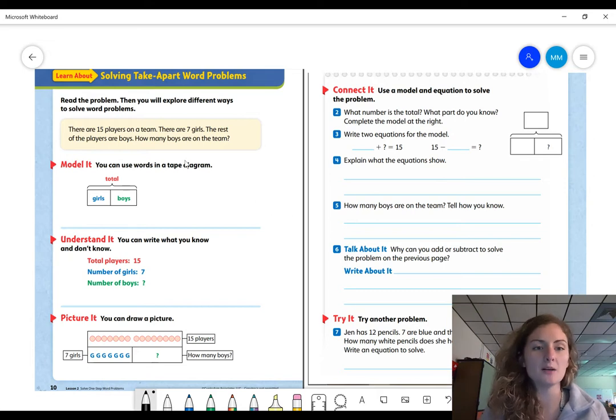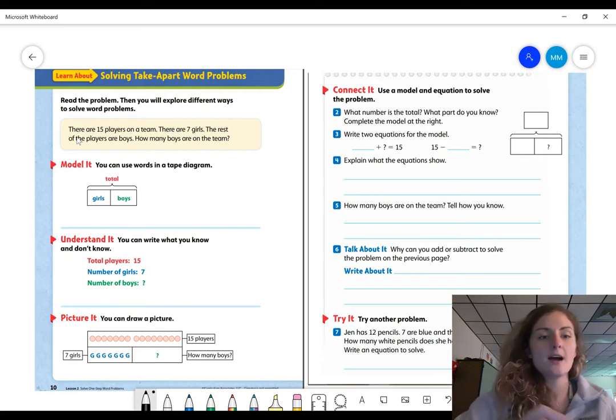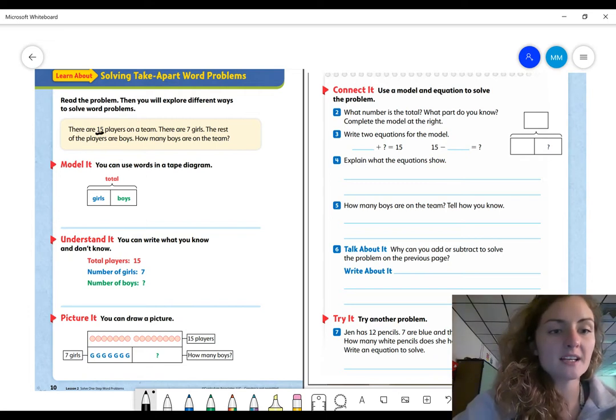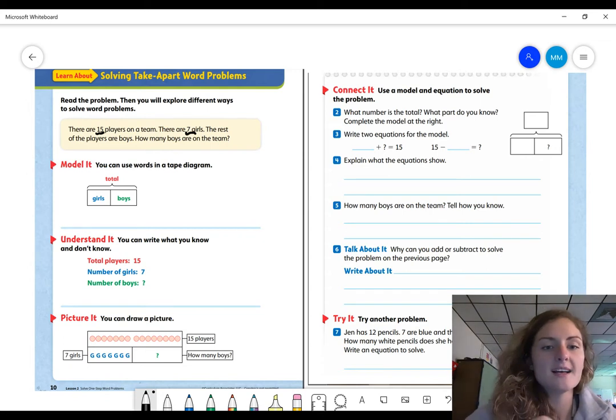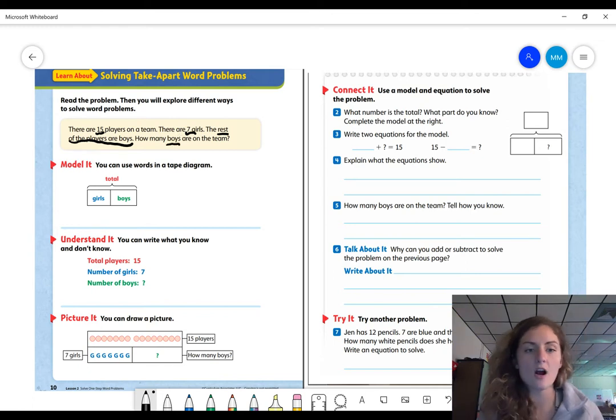It says read the problem, then you will explore different ways to solve word problems. So here is our word problem. It says there are 15 players on a team. So I'm going to underline 15. There are 15 players on a team. There are seven girls. The rest of the players are boys. How many boys are on the team?